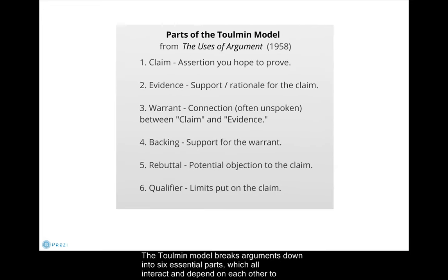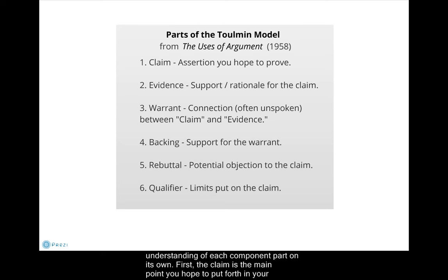The Tullman Model breaks arguments down into six essential parts, which all interact and depend on each other to form a complete argument. To understand this model as a system of argumentation, it is important to have a good understanding of each component part on its own.